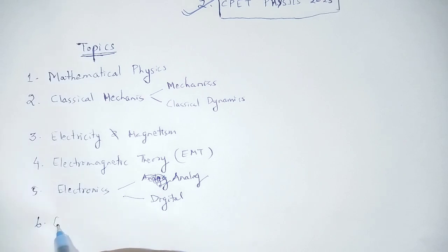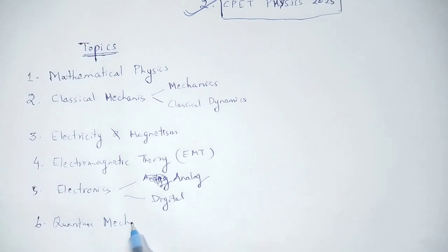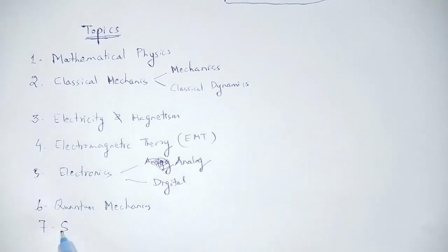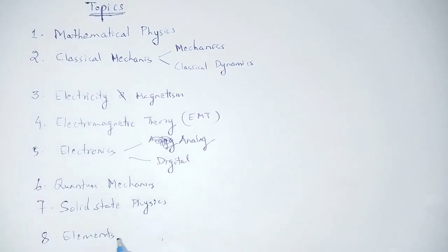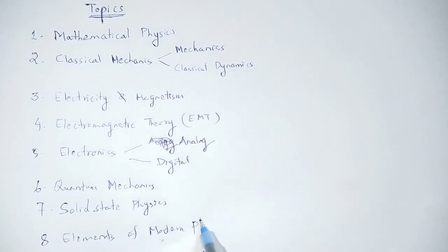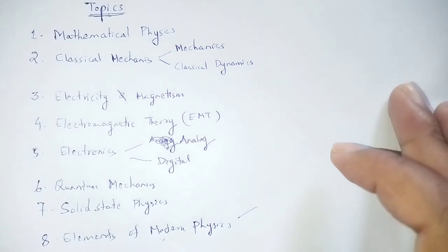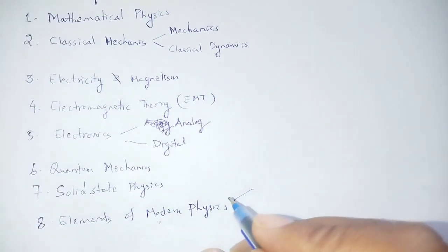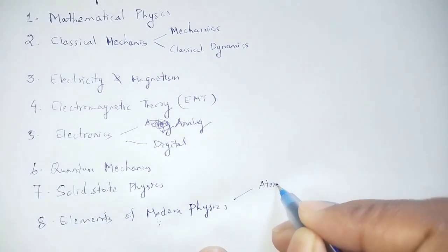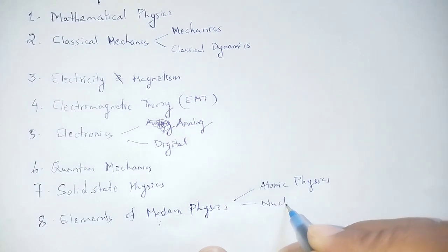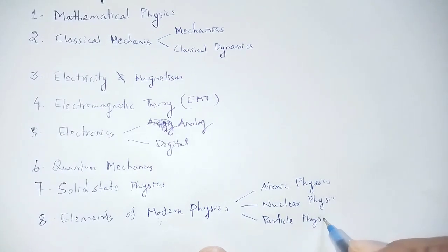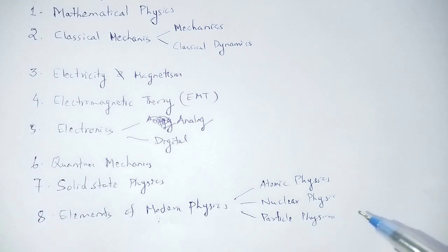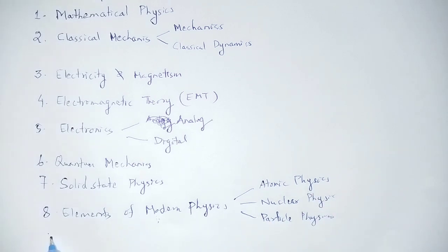Next is Quantum Mechanics, followed by Solid State Physics. Then Elements of Modern Physics — covering atomic physics, nuclear physics, and particle physics — and finally Waves and Optics.